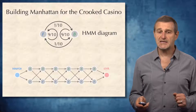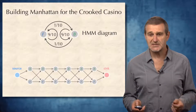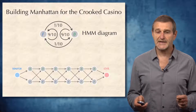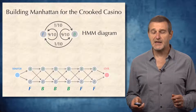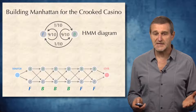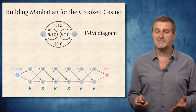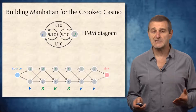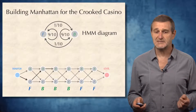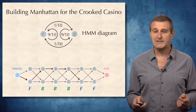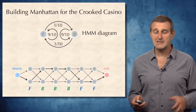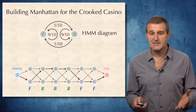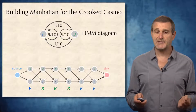In this case, we will also add source and sink nodes to the beginning and to the end of the resulting directed acyclic graph. For the HMM that emitted the string of symbols F, B, B, B, F, F, F, we will construct the following path through the Manhattan, right here. You see that for every string of emitted symbols, we can construct the path in the corresponding Manhattan.